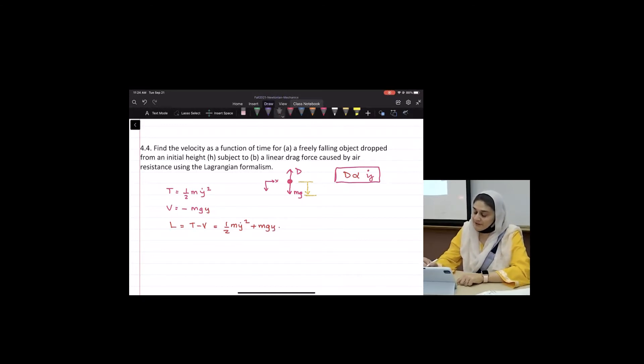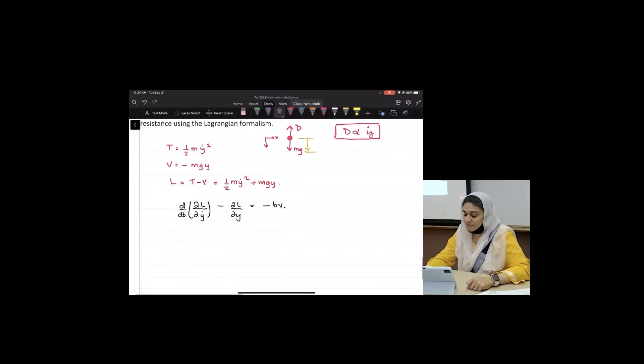So what will my differential equation look like? D over dt. What's my generalized coordinate? Y dot, right? It's all y's now. Partial L over partial y equals minus BV. Because drag is opposite to all the directions that we have chosen. Drag is up and it opposes the motion.